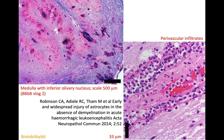The demyelination in the hemorrhagic variant occurs late in the disease, as shown in patients who unfortunately died very quickly after onset of symptoms. On autopsy, there were a lot of hemorrhages in the brainstem at the level of the inferior olivary nucleus, with perivascular infiltrates and microhemorrhages, but no demyelination in the early stage of the disease.